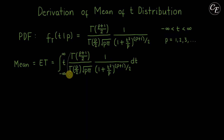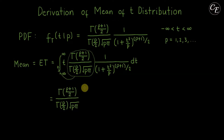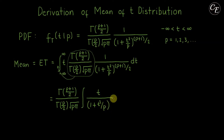We can move the constants outside of the integral. What remains inside the integral is t over (1 + t²/p) raised to (p+1)/2, integrated with respect to t from negative infinity to positive infinity.